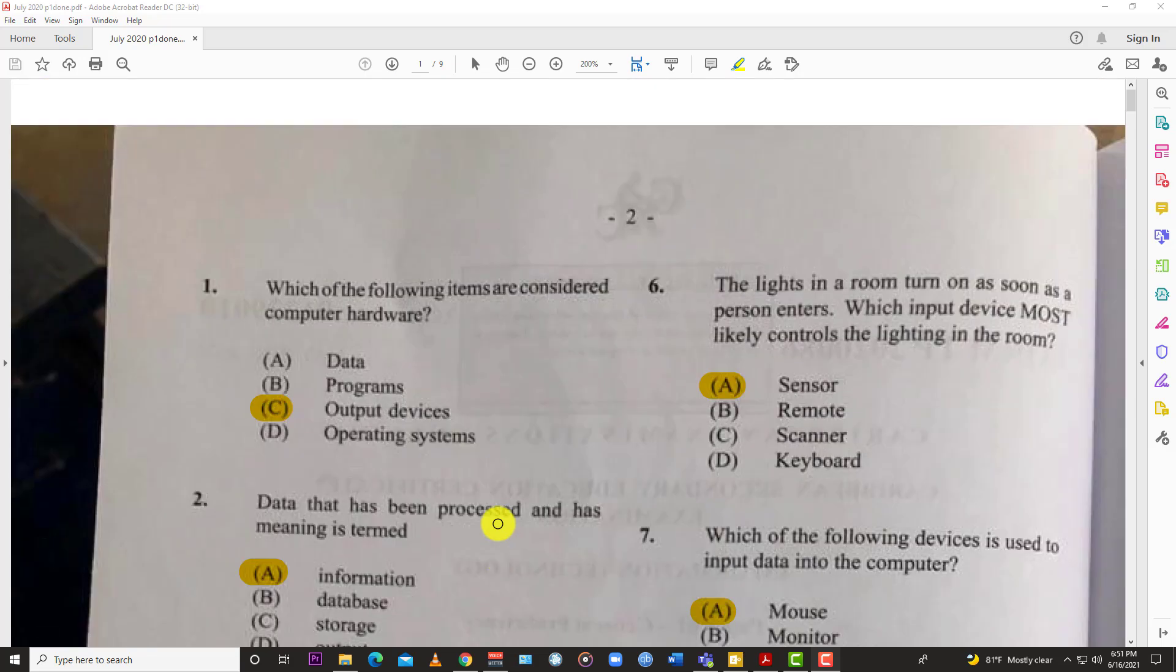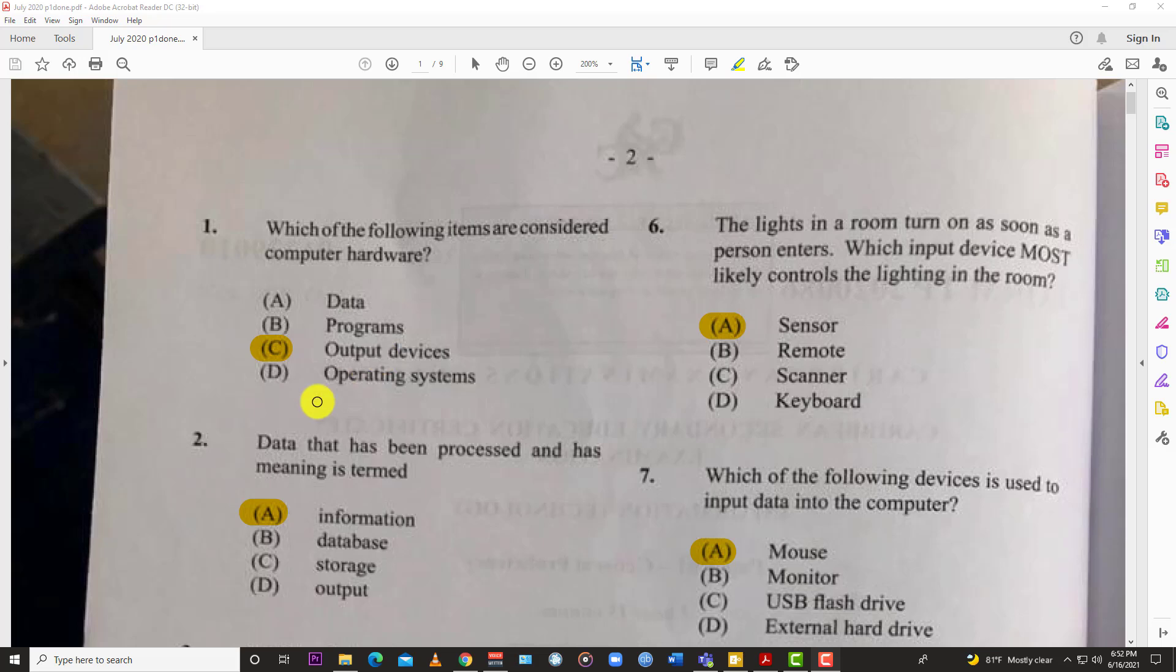I'd like to thank one of my colleagues for helping me with this paper. Let's jump into the first twenty for this video. Number one: which of the following items are considered computer hardware? Very easy - they always start off easy in CXC. The answer is clearly C, output devices. You have your monitor and so on. Programs and data are software, but the output devices are hardware.